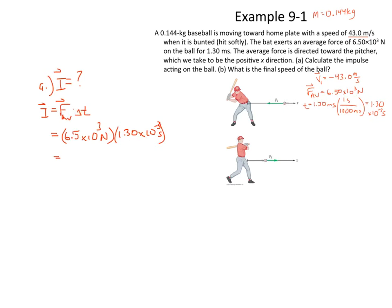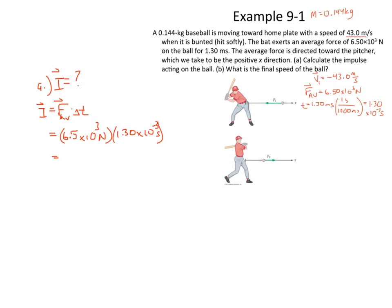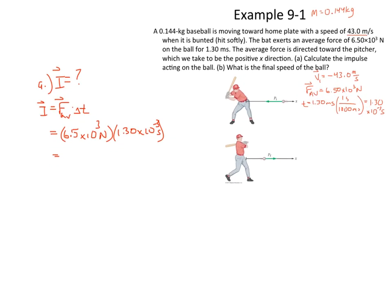So let's find out what our impulse is applied to the ball using our momentum impulse theorem. And I get a value of 8.45. That's our impulse. But 8.45 what? Well, impulse we know is a change in momentum. And momentum is mass times velocity, so that's going to be kilogram meters per second. And that is our impulse that is applied to the ball in that period of time right there.